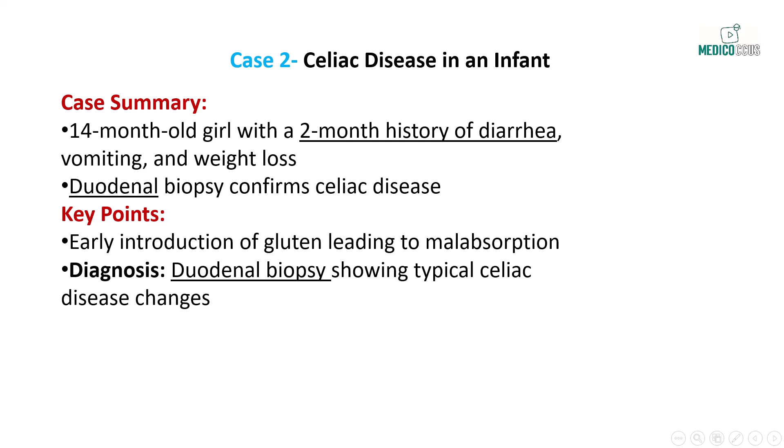As seen in the previous case, the duodenal biopsy is crucial for diagnosis, showing villus atrophy, crypt hyperplasia, and intraepithelial lymphocyte infiltration. This case is a reminder of the varied presentations of celiac disease, which the USMLE Step 1 exam often highlights.